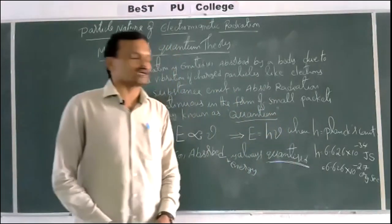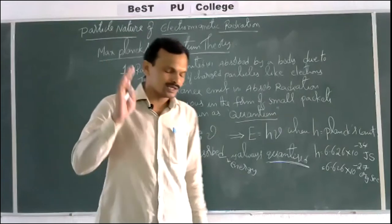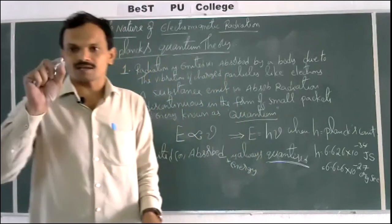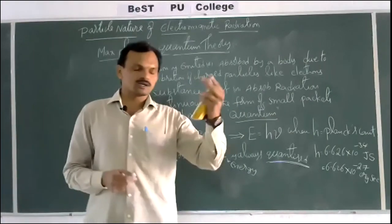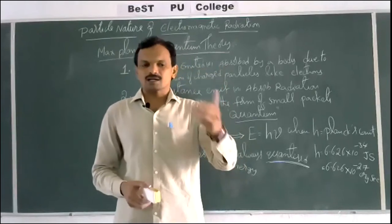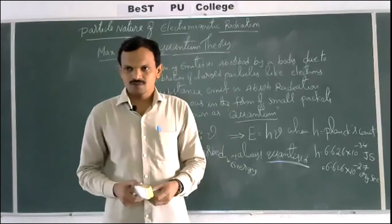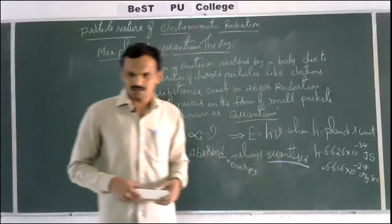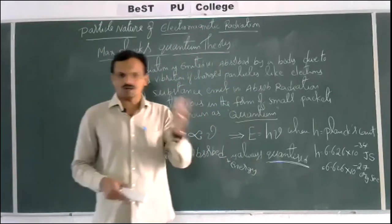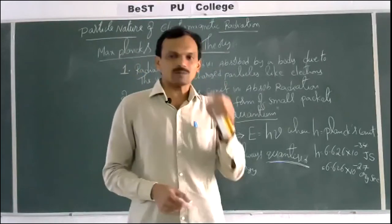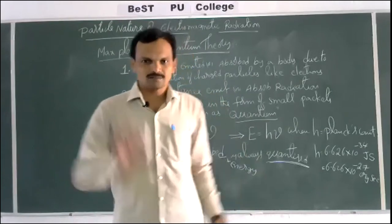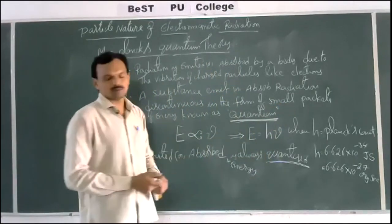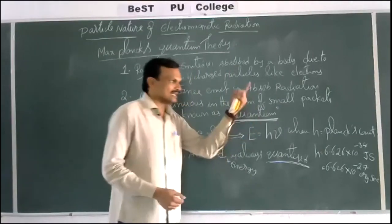A simple example of quantization: we purchase milk in packets — one packet, two, three — always in whole numbers, never 2.5 packets. Similarly, quantum is the smallest packet of energy; we can get n times that smallest packet where n is a whole number. So a quantity increased only in integral multiples is called quantization.